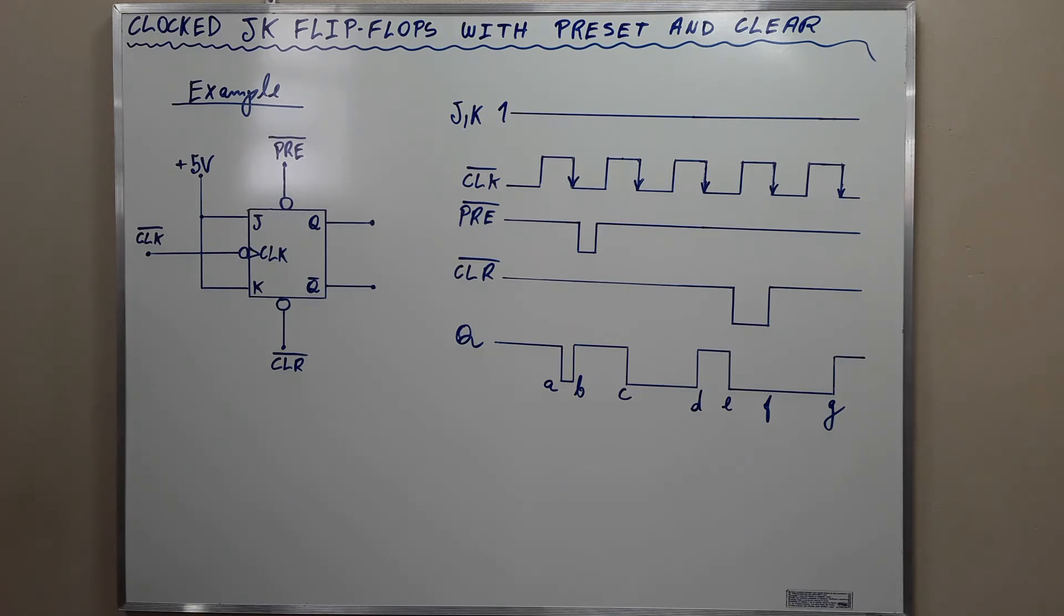At point C, the negative going transition of the clock will again cause the output to toggle to its opposite state, from 1 to 0 in this case.